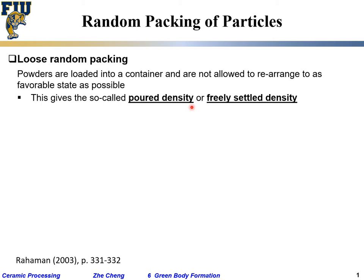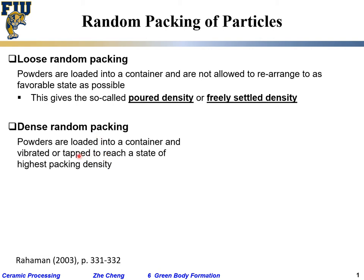You just pour powder into a container and measure the so-called relative density. In this case, the numbers are not very high — 50-something. In comparison, that would be so-called dense random packing. It's still random packing, but you do some so-called tapping, shaking, whatever, to give it enough time and energy so that it vibrates and packs, allowing the powder to settle down and find the more optimized or favored state. It will give you higher packing density, though never higher than your theoretical ordered packing.